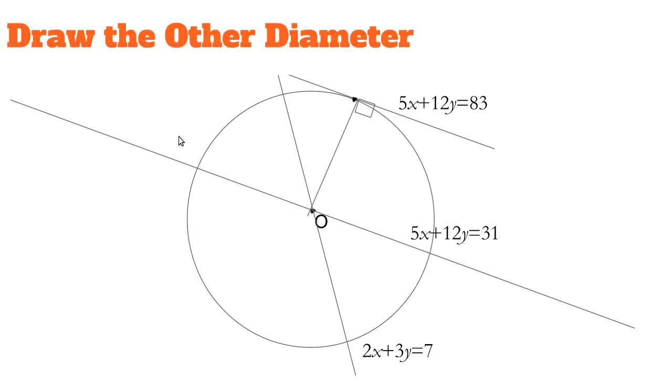Now to find the equation of the circle, we want to find the center and the radius. We can find the center with a system of equations with 5x plus 12y equals 31 and 2x plus 3y equals 7, since those are two separate lines that go through the center.